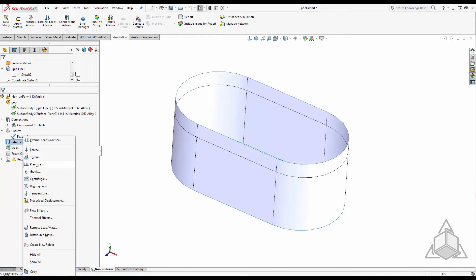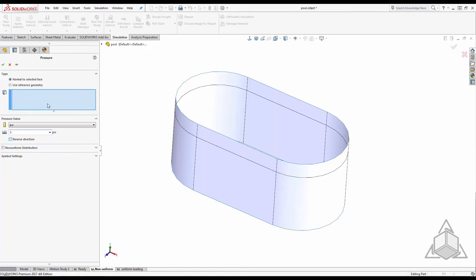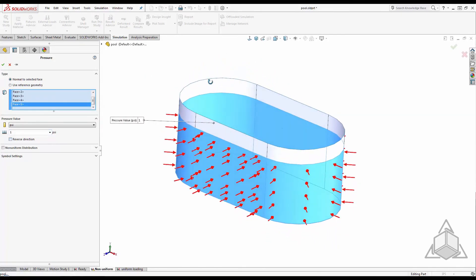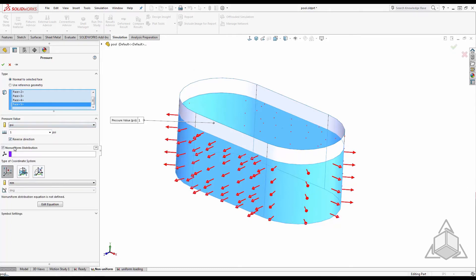Let's jump back into the pressure definition and have SOLIDWORKS figure out how this is really loaded. I'm going to select the same faces as last time and make my pressure value 1 psi. This time, let's check the non-uniform distribution checkbox.